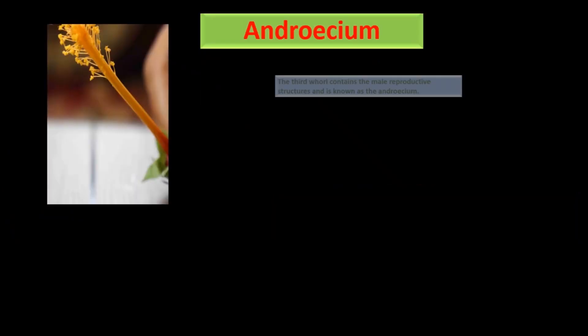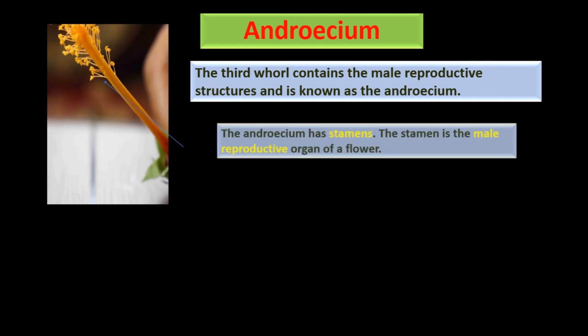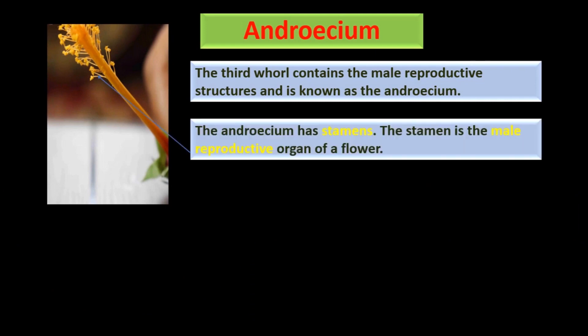The next part is androecium. The third wall contains the male reproductive structure and it is known as the androecium. The androecium has stamens. The stamen is the male reproductive organ of a flower.